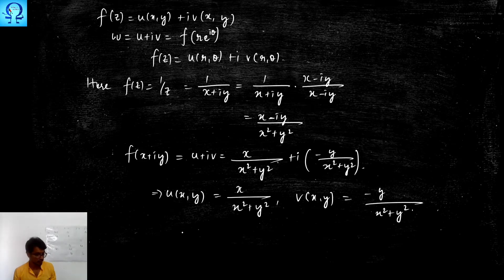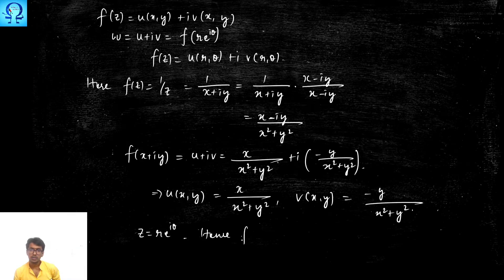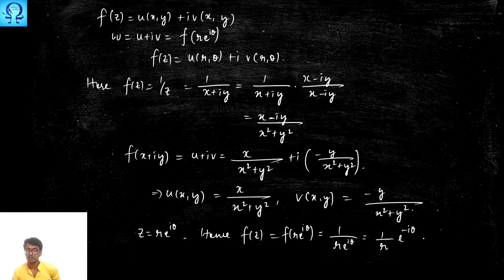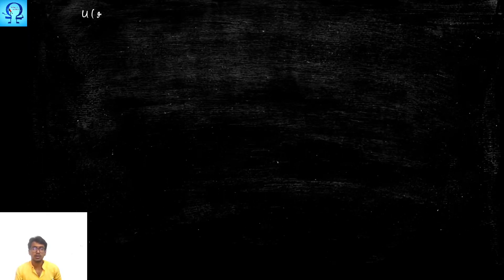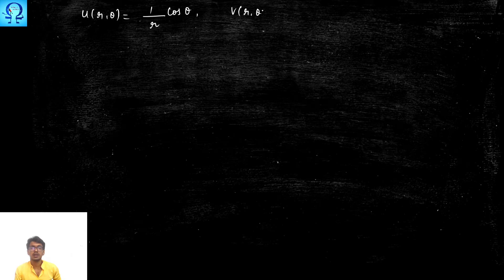If we convert to polar coordinates, z takes the form r·e^(iθ), so f(z) = f(r·e^(iθ)) = 1/(r·e^(iθ)) = (1/r)·e^(−iθ). This gives (1/r)(cos θ − i sin θ). Therefore, in polar coordinates, u(r, θ) = (1/r)cos θ and v(r, θ) = −(1/r)sin θ.